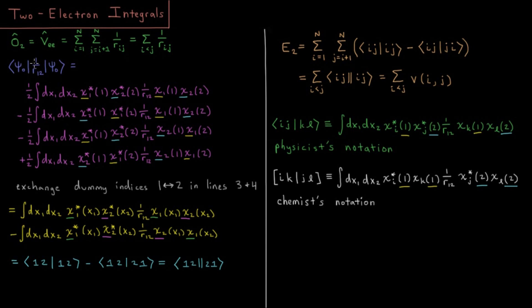Since it's just the one over r12 operator for a given pair of electrons, for our two-electron operator here, we're just going to substitute one over r12 because that really is the only two-electron operator that we're interested in.